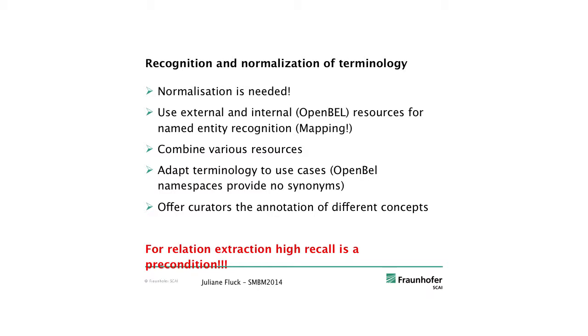Normalization is needed. We combine various resources and are largely free of the NIH syndrome — non-invented here syndrome — so we reuse stuff others have done and also make a lot of our stuff freely available. OpenBEL namespaces often provide no synonym mappings, and that is one of the tricky bits where our pre-tagging has to make sure the link to the OpenBEL namespace is given so that later the BEL writer can refer to that namespace.